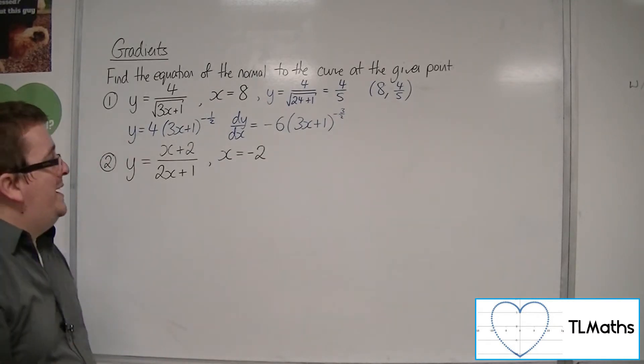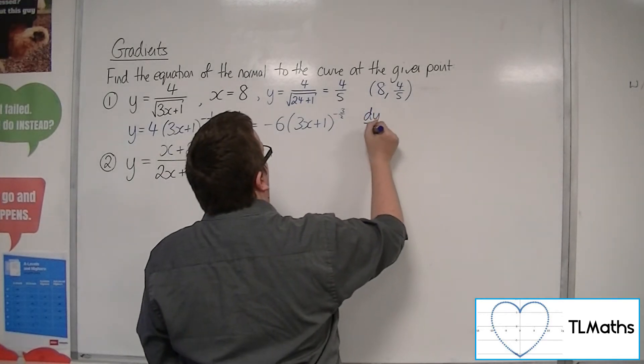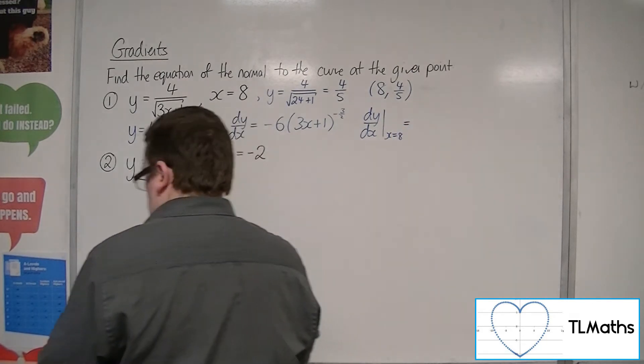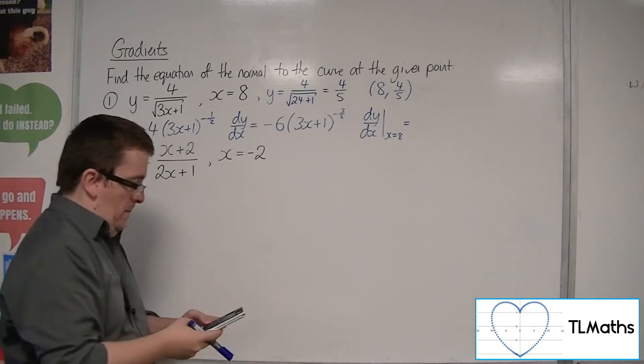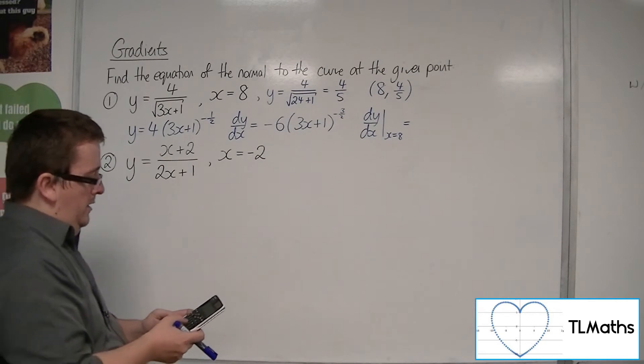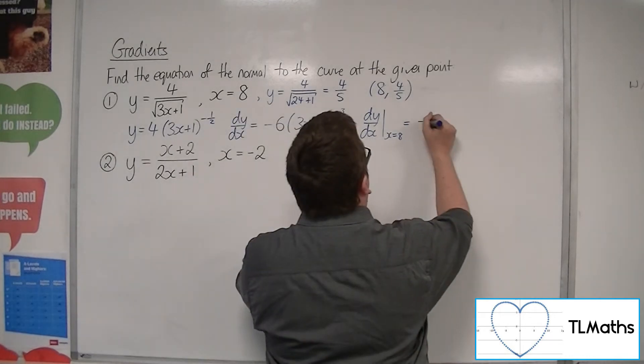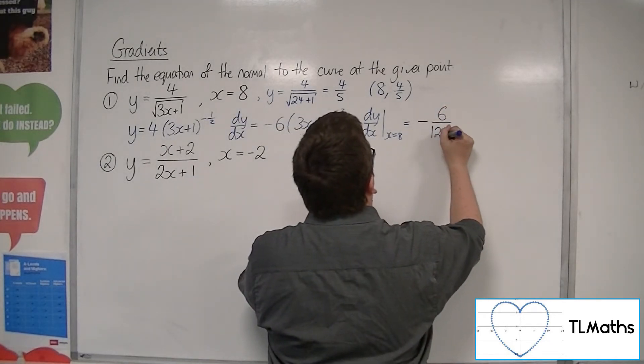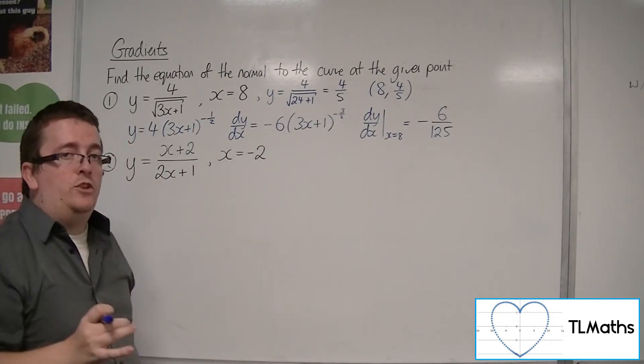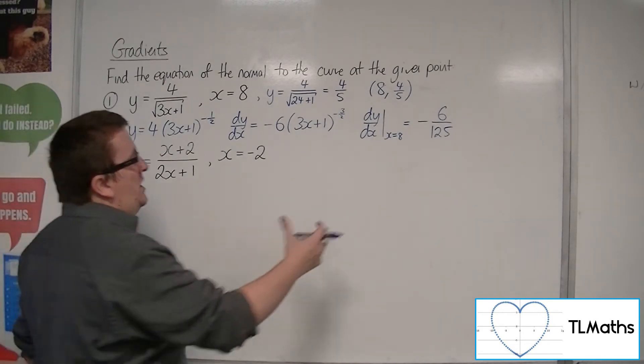So I now want to evaluate the gradient at the point x equals 8. So dy/dx when x is 8 is equal to minus 6 times by 3 lots of 8 plus 1 to the power of minus 3/2, and that's minus 6 over 125. Now that is the gradient of the tangent to the curve at that point. I want the gradient of the normal, so I'm going to use the negative reciprocal of that.